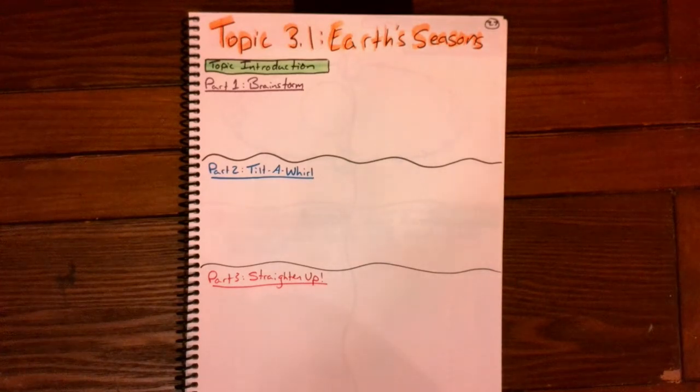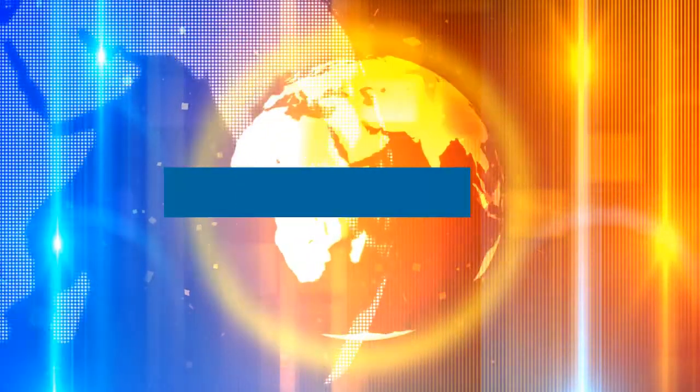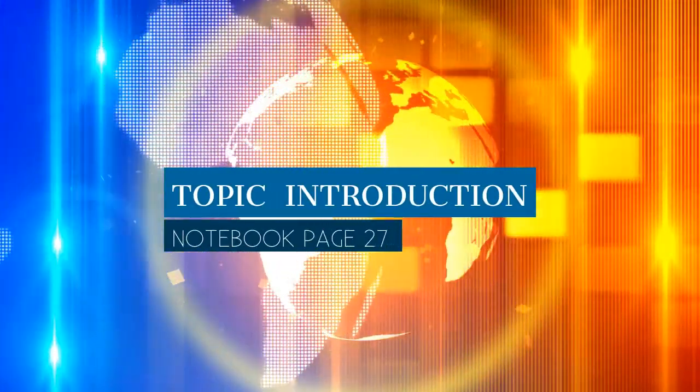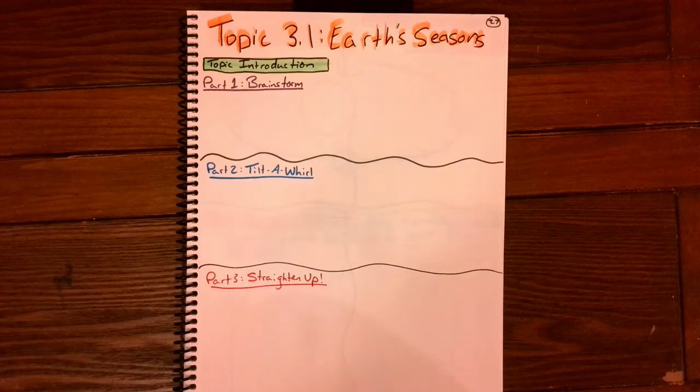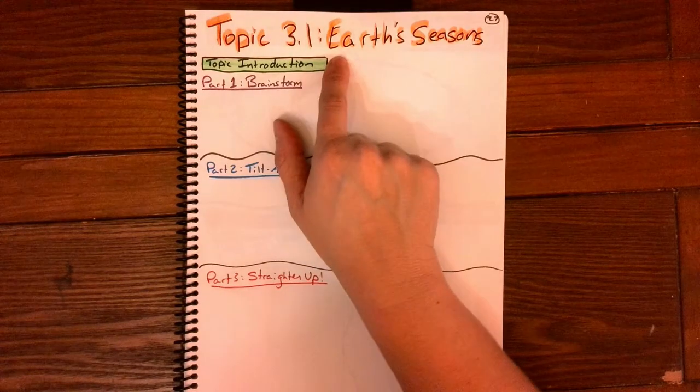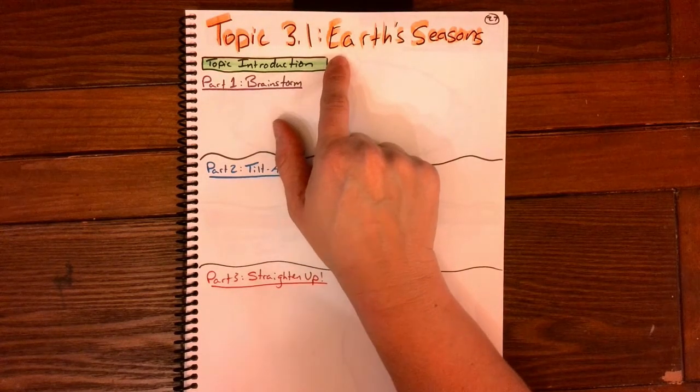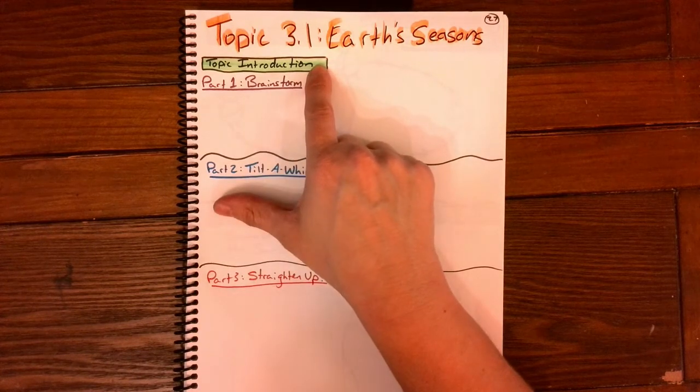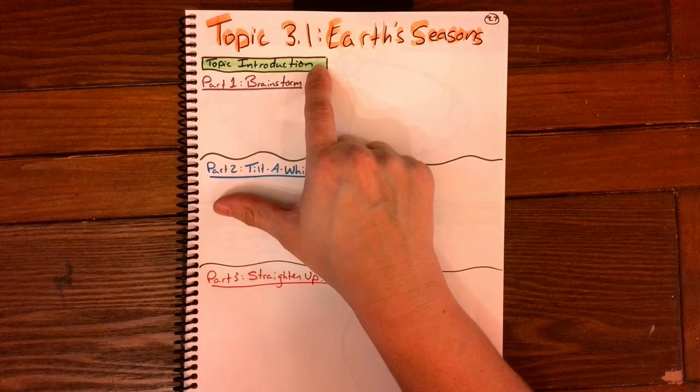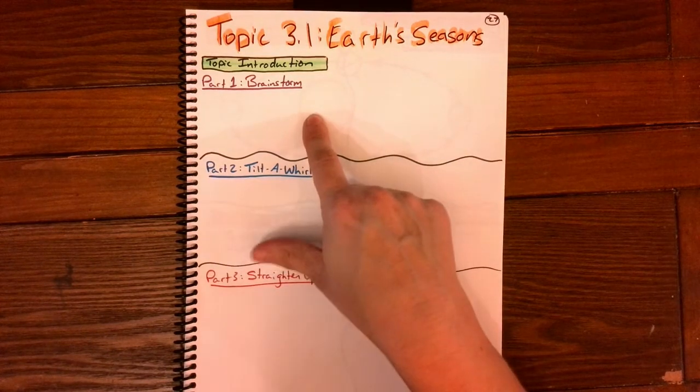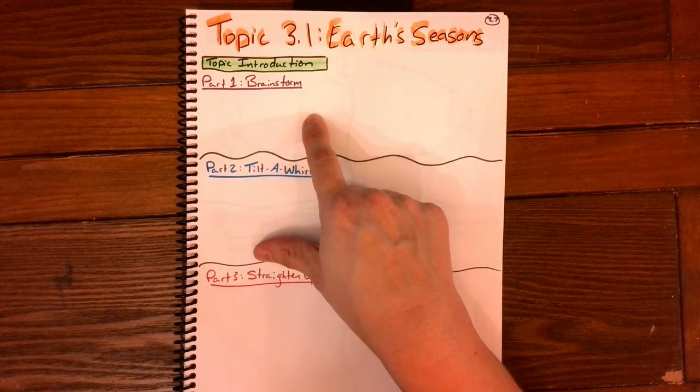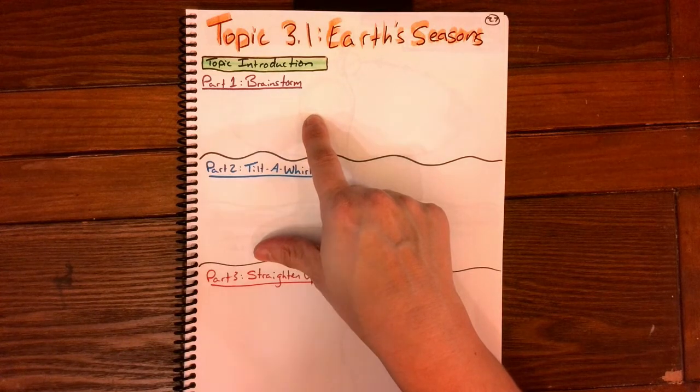Let's start on page 27. Page 27 at the top. Please call this topic 3.1, Earth Seasons. This is our topic introduction. This will be based off of the YouTube video that we watch on Mondays. You'll start with part one, a brainstorm. And in this brainstorm, you are going to think of some different things that you already know about seasons.